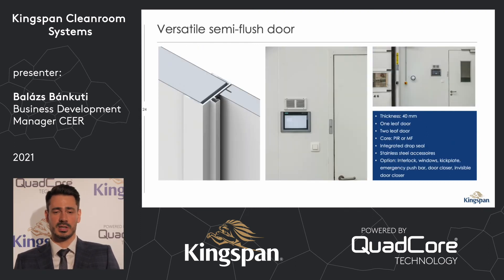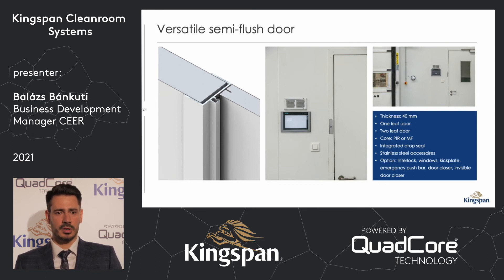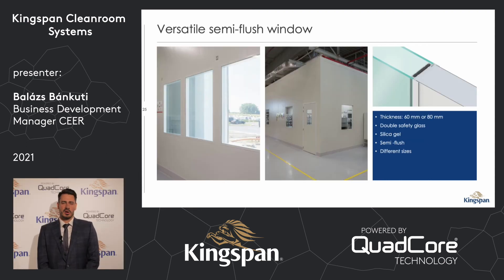On the next slide you see our semi-flush door. The semi-flush door has the same surface, the same accessories, and the same drop seal as the precision. The only difference is that the leaf is 40 mm and the frame is adjusted to the size of the panel. In the next slide you can see our versatile windows — this is a semi-flush solution for cleanrooms, available in 60 or 80 mm thickness and in different sizes.